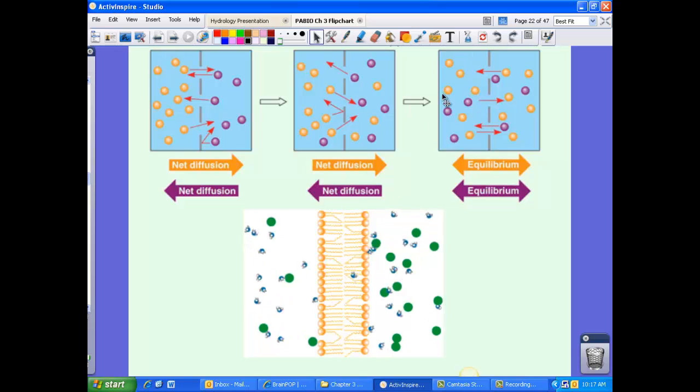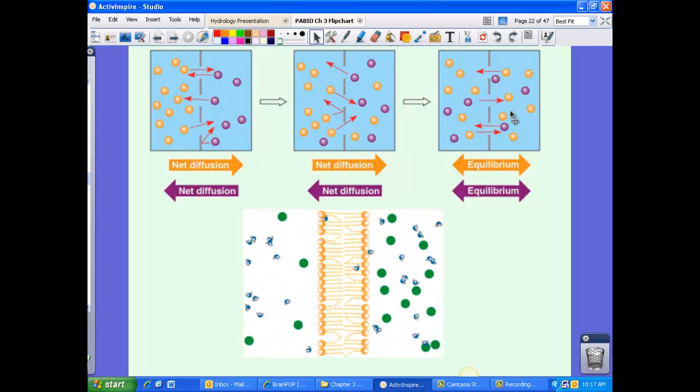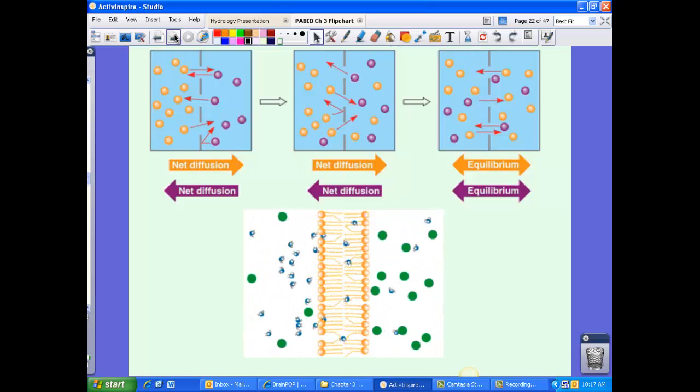If we take a look at the purple, we notice we have three purples on each side. If we take a look at the orange, we'll have six on each side. So we have equal numbers of orange and equal numbers of purple on both sides. That is equilibrium. And technically that is what the cell strives for, the same amount of substance on both sides.